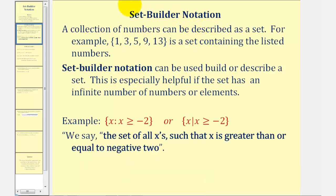A collection of numbers can be described as a set. For example, this is a set containing the numbers 1, 3, 5, 9, and 13. These numbers are also often called elements.